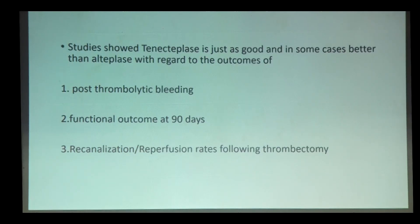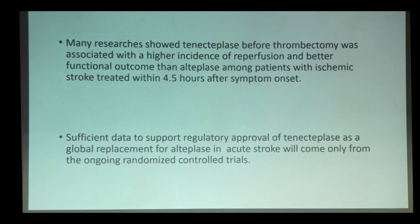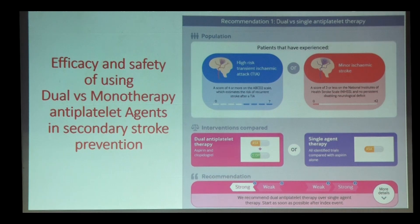Other benefits of tenecteplase include lesser chances of post-thrombolytic bleeding, better functional outcome at 90 days, and better re-canalization. Sufficient data to support regulatory approval of tenecteplase as a global replacement of alteplase in acute stroke will come only from ongoing randomized controlled trials.